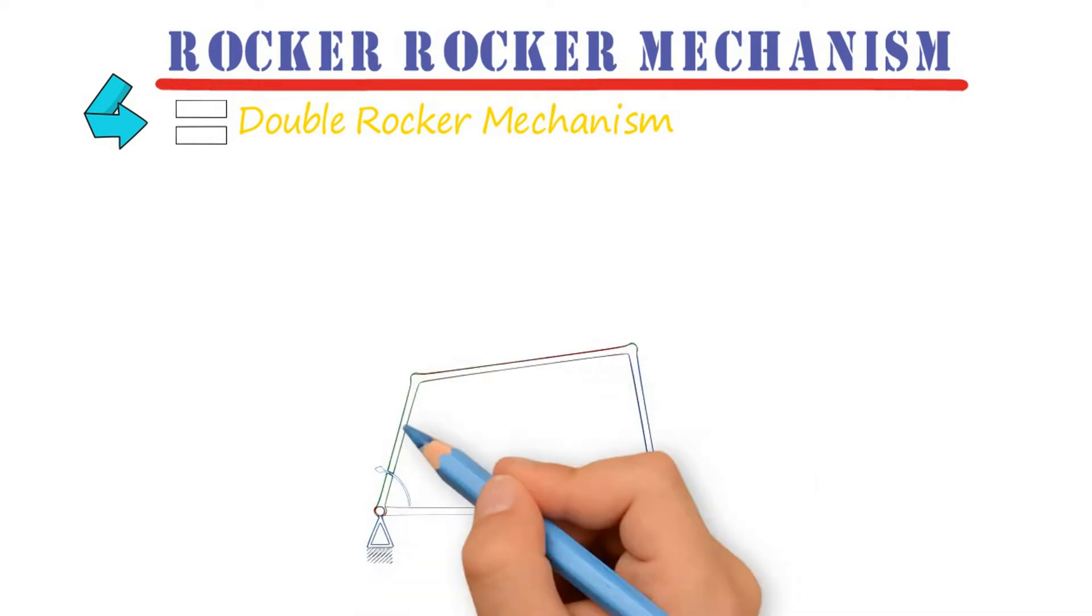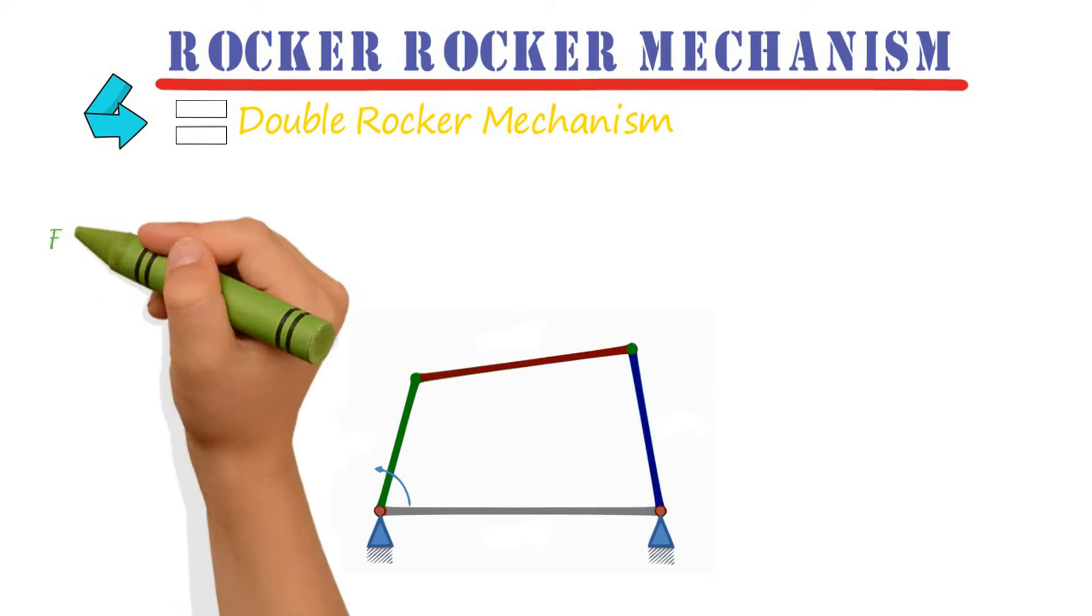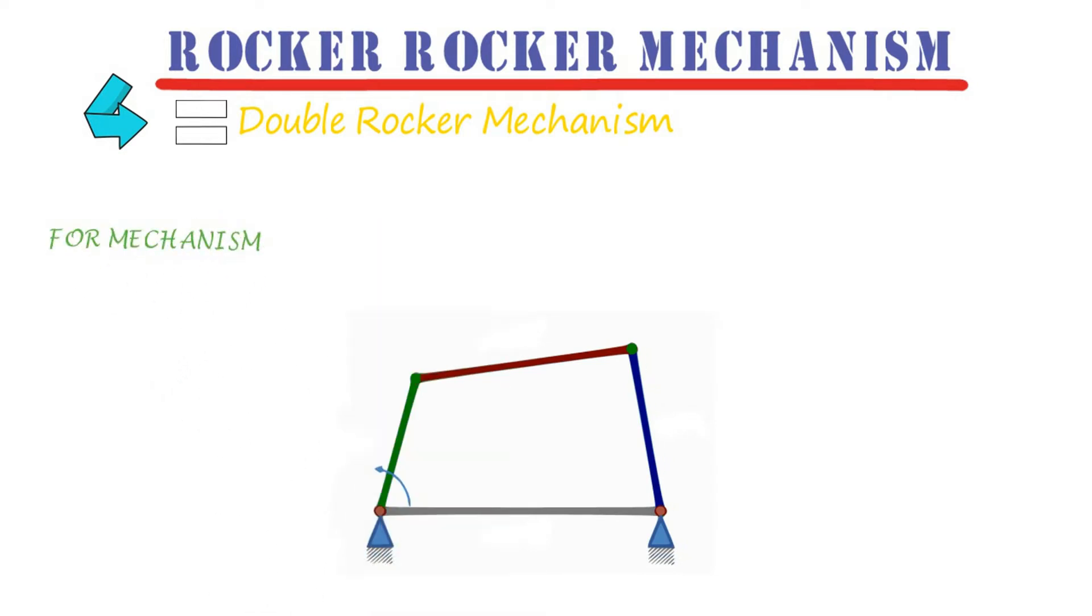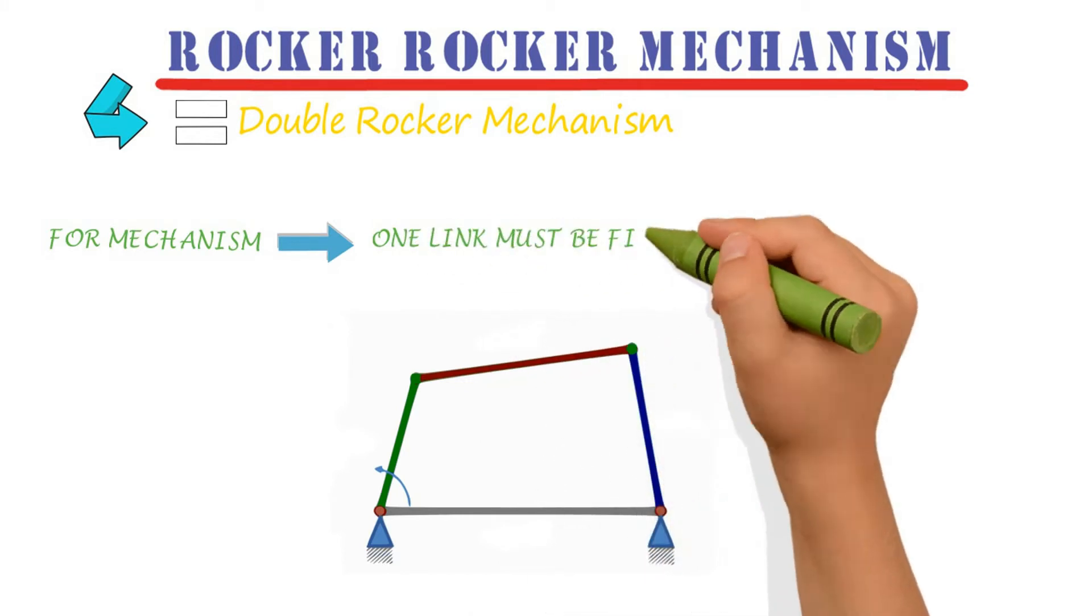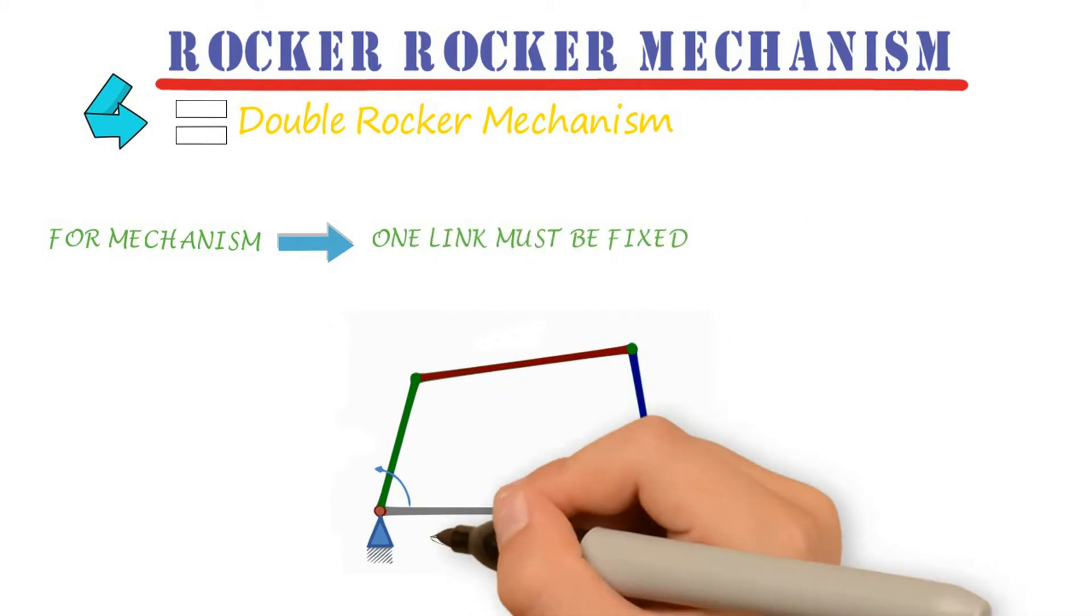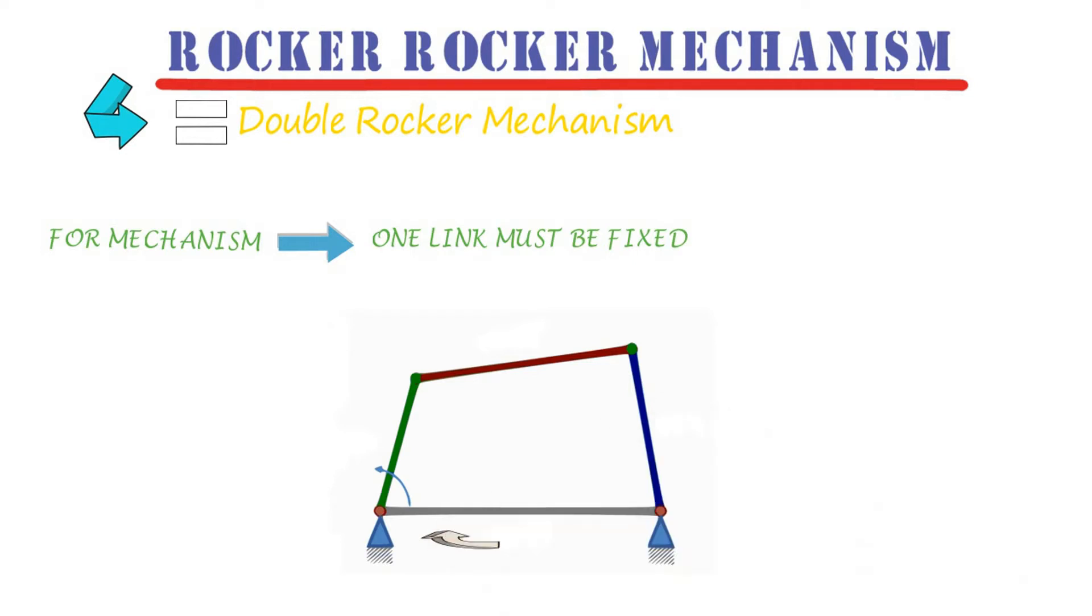Let us draw a four bars mechanism. In a four bar mechanism, one link must be fixed. See, here, bottom one is fixed link.